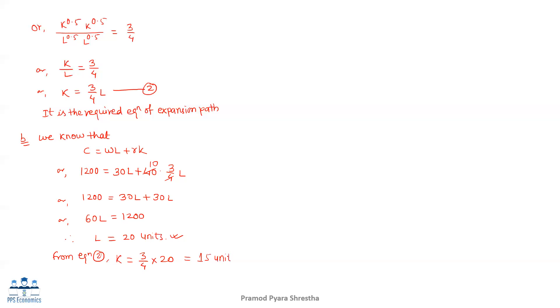From equation 2, K equals (3/4) multiplied by L equals (3/4) multiplied by 20, which equals 15 units.